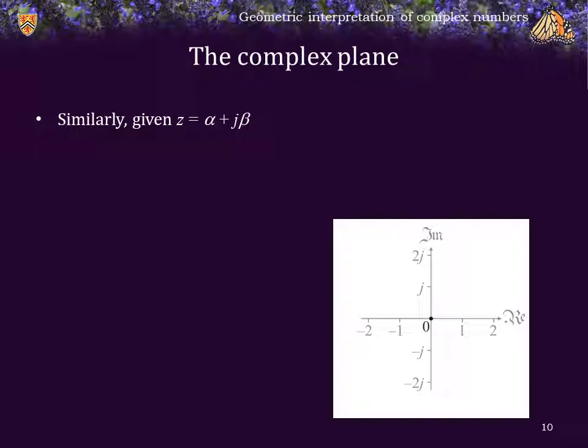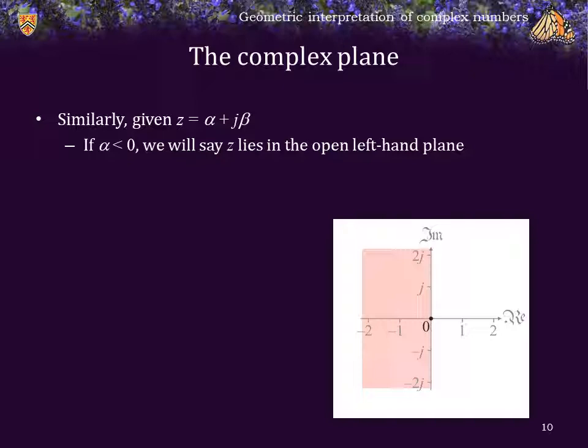Similarly, given z equals alpha plus j beta, if alpha is strictly negative, we will say that z lies in the open left-hand plane. And if alpha is less than or equal to 0, we will say z lies on the closed left-hand plane.